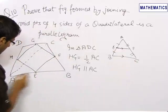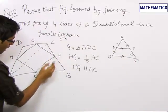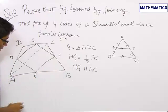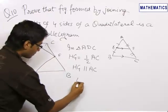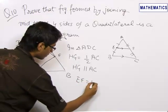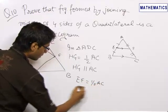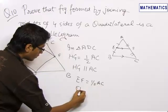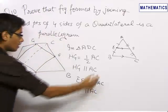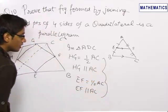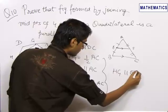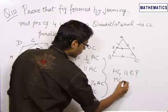Similarly, in triangle CBA, we have F as the midpoint of CB and E as the midpoint of BA, so EF will be equal to half of AC and EF will be parallel to AC. From these four equations, we get HG is parallel to EF and HG is equal to EF.